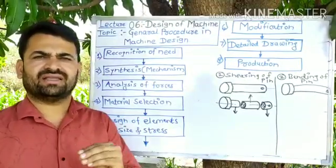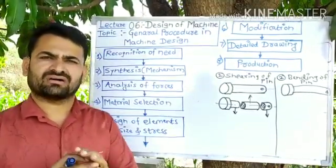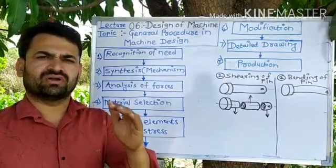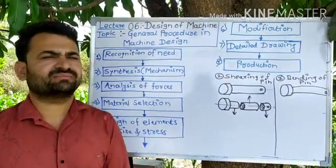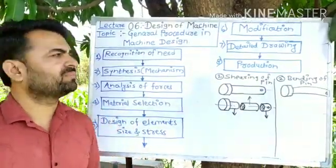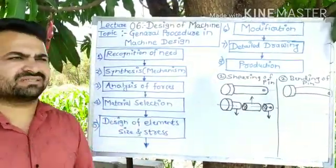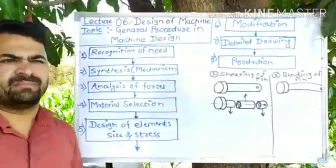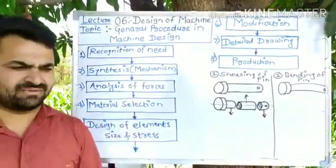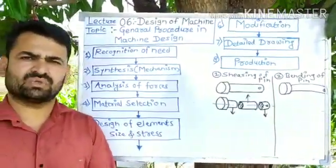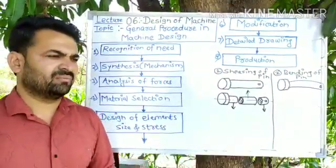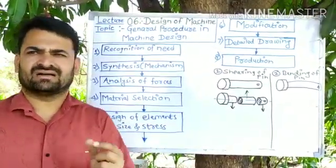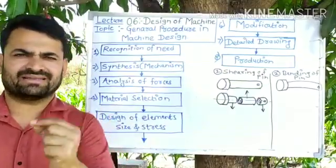While designing any component, any part, or a total machine, the designer has to follow different steps that we are going to see today. The first step is recognition of need — for designing anything, the designer must know what is to be designed. The aim should be clear before designing anything.